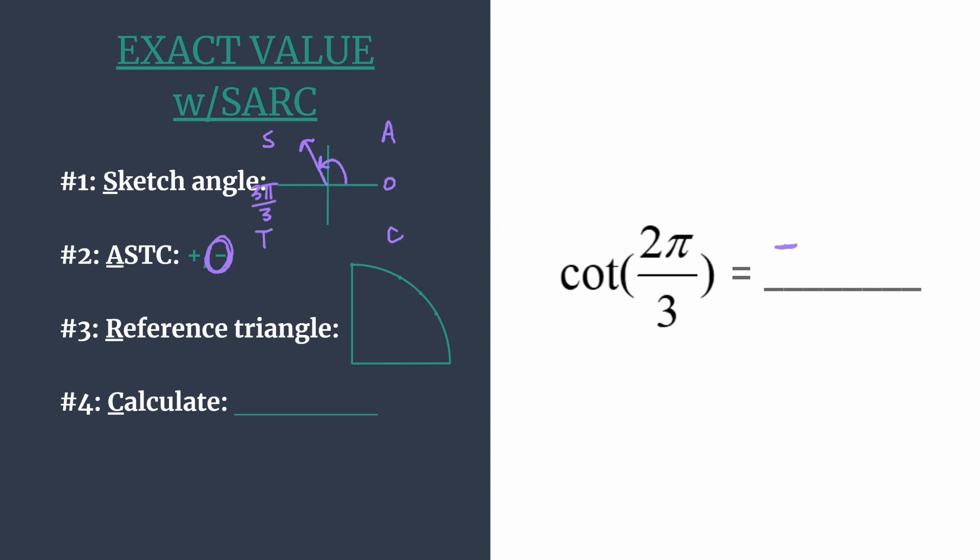If you had an angle in quadrant 3, know that tangent and its reciprocal cotangent are positive. All the others are negative. And in quadrant 4, the positive trig functions are cosine and secant, while all the others are negative.